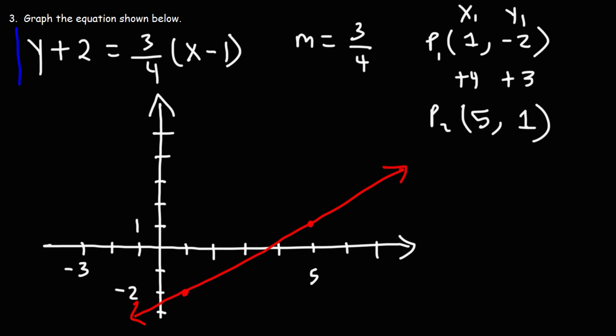So to summarize the steps: Step 1 — identify the point and the slope. Step 2 — plot the point. Step 3 — use the slope to get the second point. Step 4 — draw a line connecting the two points. And then you'll have your answer.